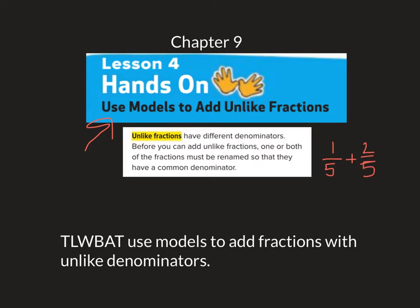One fifth plus two fifths, we just add the numerators. We would get three fifths, right? Because the bottom really talks about the size of the piece, and then the top talks about how many we're talking about. So if I have one fifth and then I add two more fifths, now I have three fifths. Same goes for subtracting.